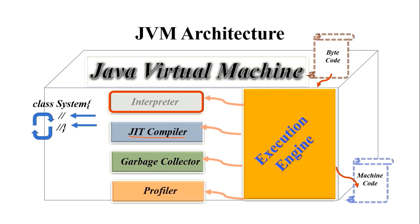This problem is solved by the JIT compiler, which uses a special component known as a profiler. The profiler finds hotspots where repeated function calls appear, and the repeatedly executed code is converted to native code so that repeated method calls can be avoided.